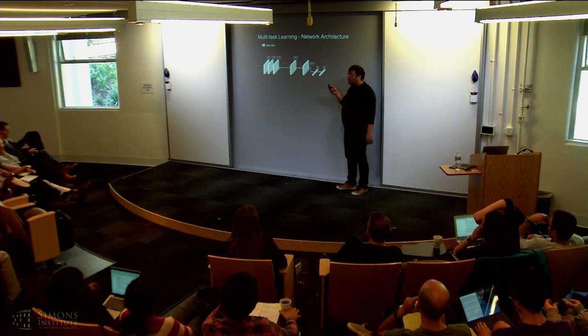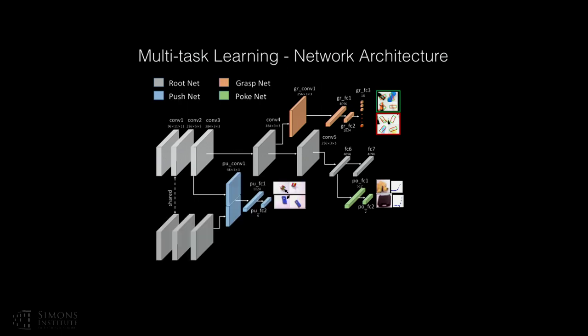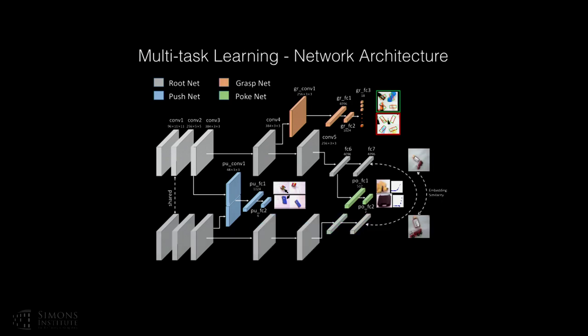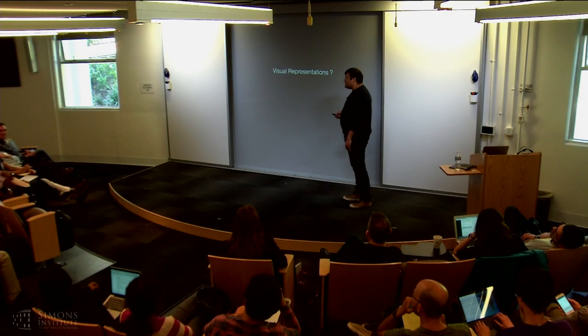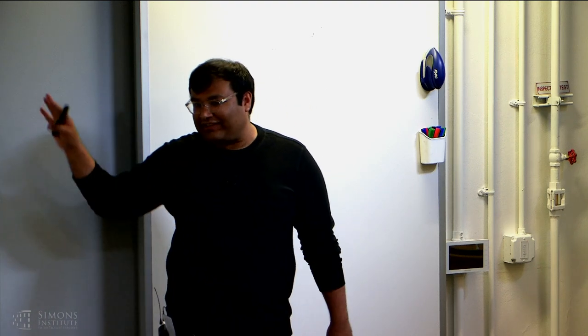We use a standard AlexNet architecture and put different losses at different layers because the tasks are different. Grasping is hard, so we predict it after the fourth convolutional layer. For poking, we predict after the sixth fully connected layer. Pushing is simpler, so we predict after three convolutional layers. Viewpoint invariance is the hardest, so its loss comes at the seventh layer. An audience member asked whether these placements were tuned empirically — we tried it and it worked; in our next paper we tried a much simpler architecture and it worked reasonably well too.